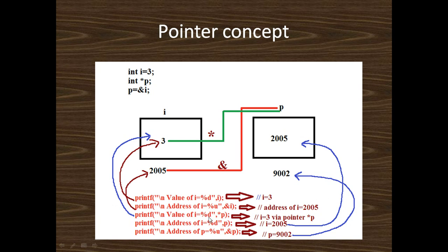Again, to print the value of i via pointer we use printf("%d", *p). When we write *p, it refers to the value of i. So when we write %d with *p, it points to the value of i — i equals 3 via pointer *p. If we print the address of i using printf("%d", p), p points to the address of i, so it prints 2005.